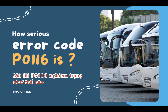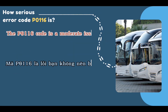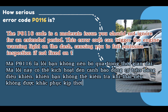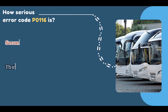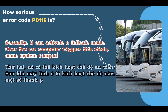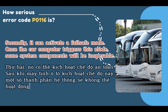The P0116 is a moderate issue you should not ignore for an extended period. This error code can trigger the check engine warning light on the dash, causing you to fail an emission inspection if not fixed on time. Additionally, it can activate a fail-safe mode, during which some system components will be inoperable.